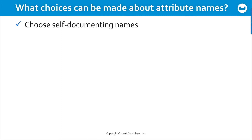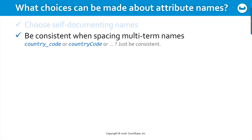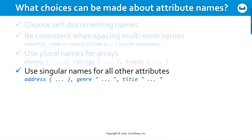Let's get to attribute names — what are some conventions? First, you should use descriptive names that are self-documenting for anyone who looks at your document later. Second, it's good to be consistent when spacing multi-term names. You could use an underscore or the camel case style popular in the Java programming environment. It doesn't matter to JSON, but be consistent with whatever choice you make. There's also a common convention that if the value of an attribute is an array, you pluralize the name; for all other attributes, you use singular names.